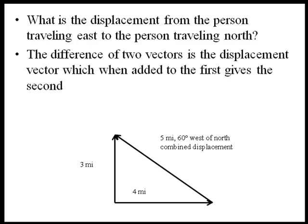What we have in this case is the difference of two vectors, which is adding this missing displacement vector to get the sum. The person heading east plus the displacement between the two people is equal to the vector of the person heading three miles north.